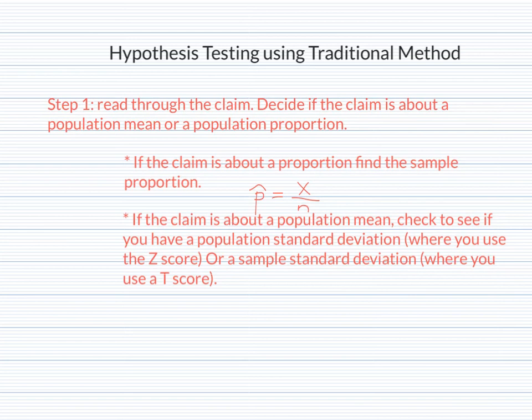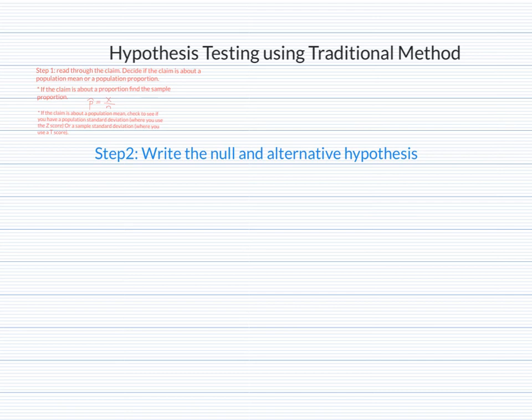After we get what our parameter is, we move on to step two: write the null and the alternative hypothesis. The null hypothesis is H-naught and the alternative hypothesis is H1. Our last video, the introduction to hypothesis testing, covered in detail how to write the null and the alternative hypothesis.